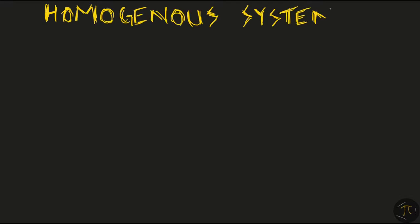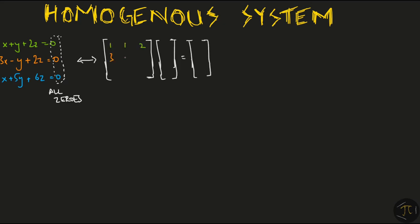A homogeneous system of equations is a set of equations where all the constant terms are zero. Something like this set of equations, where you have all zeros on the right hand side. As usual, we convert this linear system of equations into the matrix form Ax equals the zero vector.